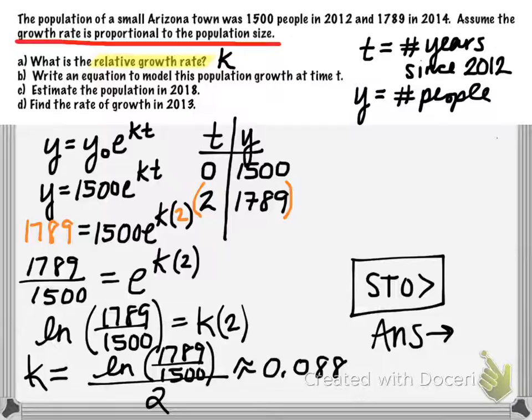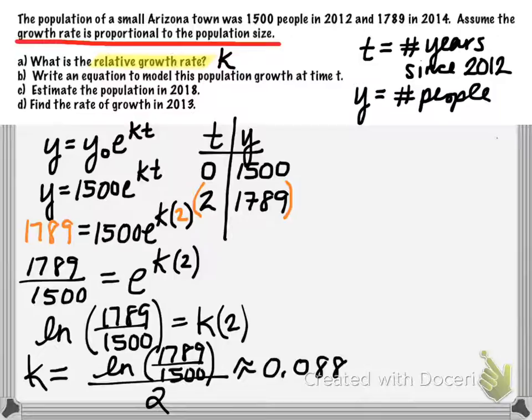If you type in the natural log of 1789 divided by 1500, all of that divided by 2, so you have the long decimal version of this, then hit your store button, and on your calculator you should see a little ans for answer with an arrow, then you can store this value as any letter on your calculator. So if you want to store it as K, then you could go ahead and do alpha and find K on your calculator. Or you could just store it as X if you wanted to. But I recommend that you use the store feature here. That way in our future computations we won't use the rounded decimal, we'll use our stored value. So I'm just going to make a little note to myself here that I stored this number in my calculator.